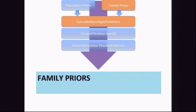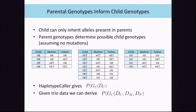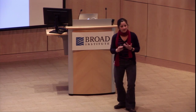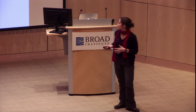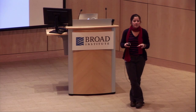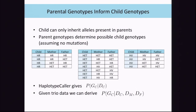If we have sequencing data from the parents of the sample in question, we can also apply family priors with this tool. From basic Mendelian genetics, a child can only inherit alleles present in the parents, given that there are no spontaneous mutations. There are only certain valid combinations of homozygous reference, heterozygous, and homozygous variant genotypes for all three family members. Anything else would feature a Mendelian violation.